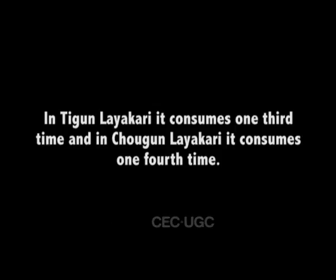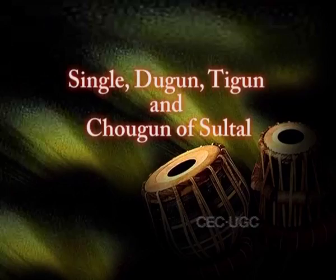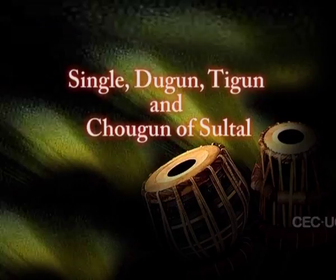In Tegun Laikari, the Theka consumes one-third of the time, and in Chogun Laikari it consumes one-fourth of the time. Alternatively, in Tegun the Theka of Tal is repeated three times, and in Chogun it is repeated four times, because of the three and four times faster Lai. See Singhal, Dugun, and Chogun of Sultal.